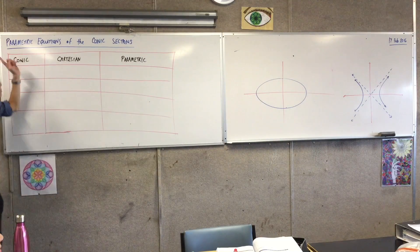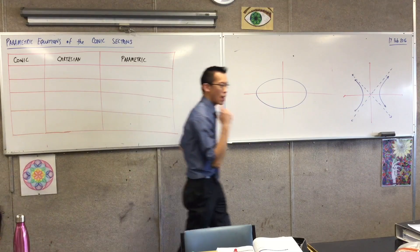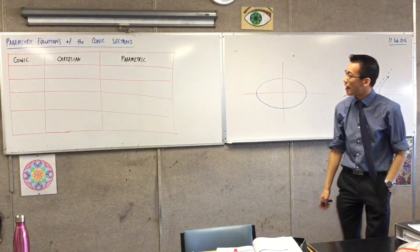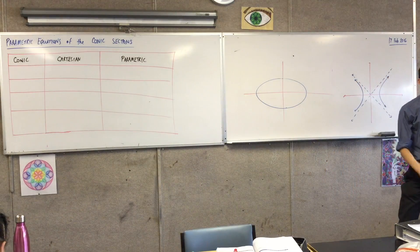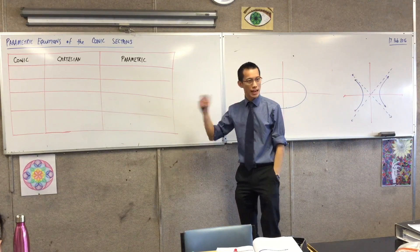What we're looking at is the parametric equations of the conic sections, all four of them. Now we already know most of these, and so it won't take too much effort to develop what they are. But what I want to demonstrate is how these relate and how you use them very briefly.